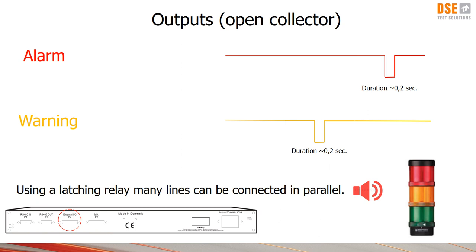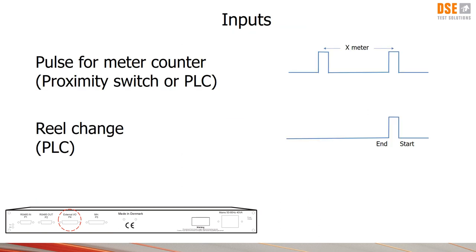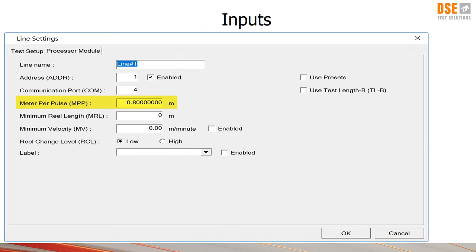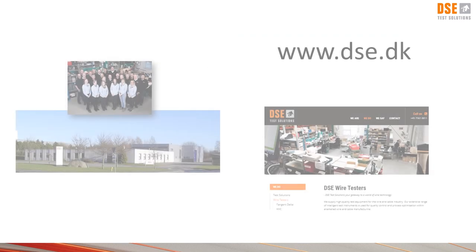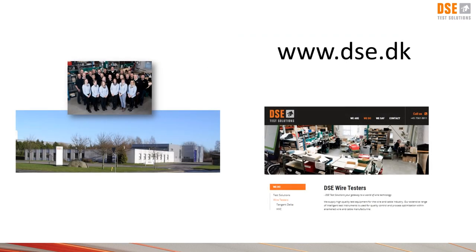The system needs to know the speed and this is done by sourcing pulses to the processor module. The pulses can be supplied from a proximity switch mounted on a pulley or it can also come from a PLC. In the software the meters or fraction of meters between each pulse is configured. When a reel of wire is completed a signal for the information is needed. At reel change the complete set of data for the reel or spool is being stored and can later on be sent to a customer or viewed for inspection. Thank you from us at DSE Test Solutions for watching and I hope you will go to our webpage or contact us in case of questions or if you need further information.